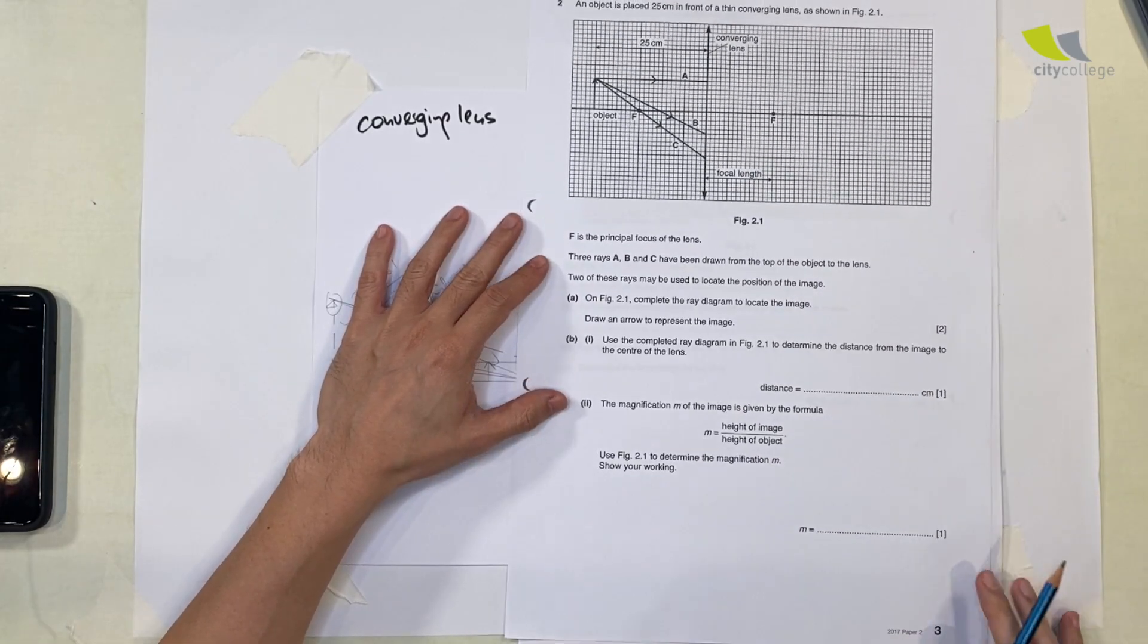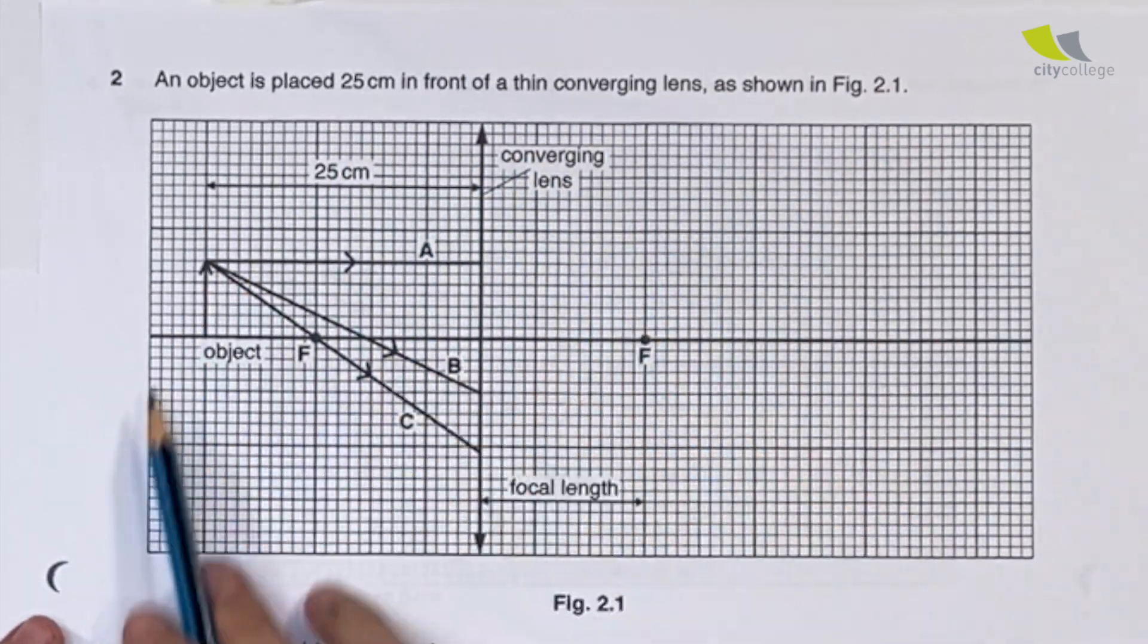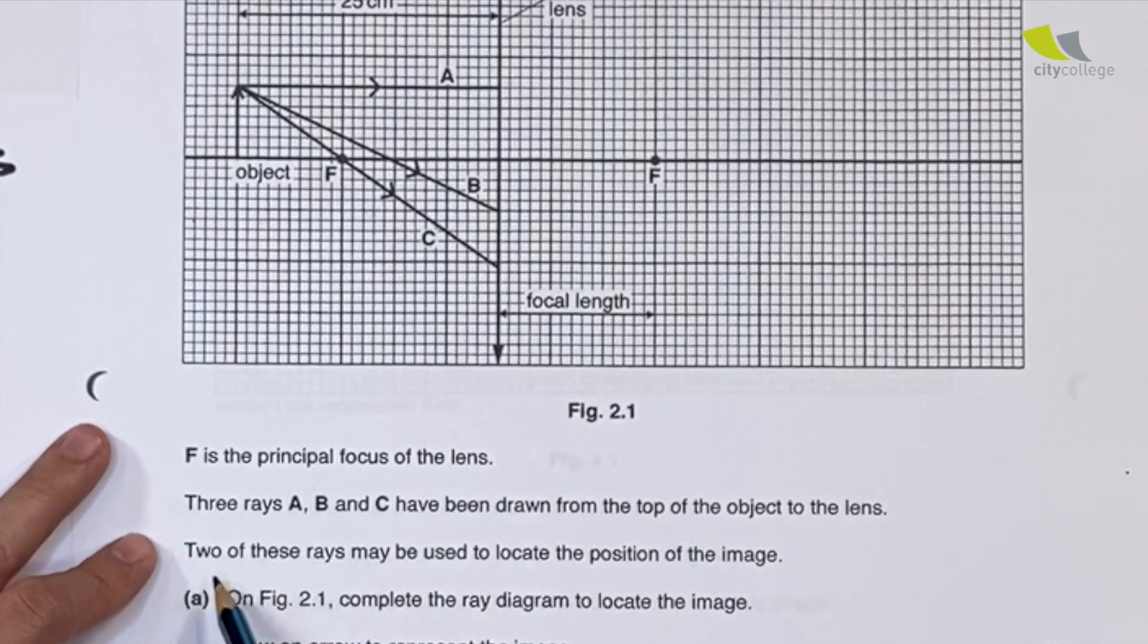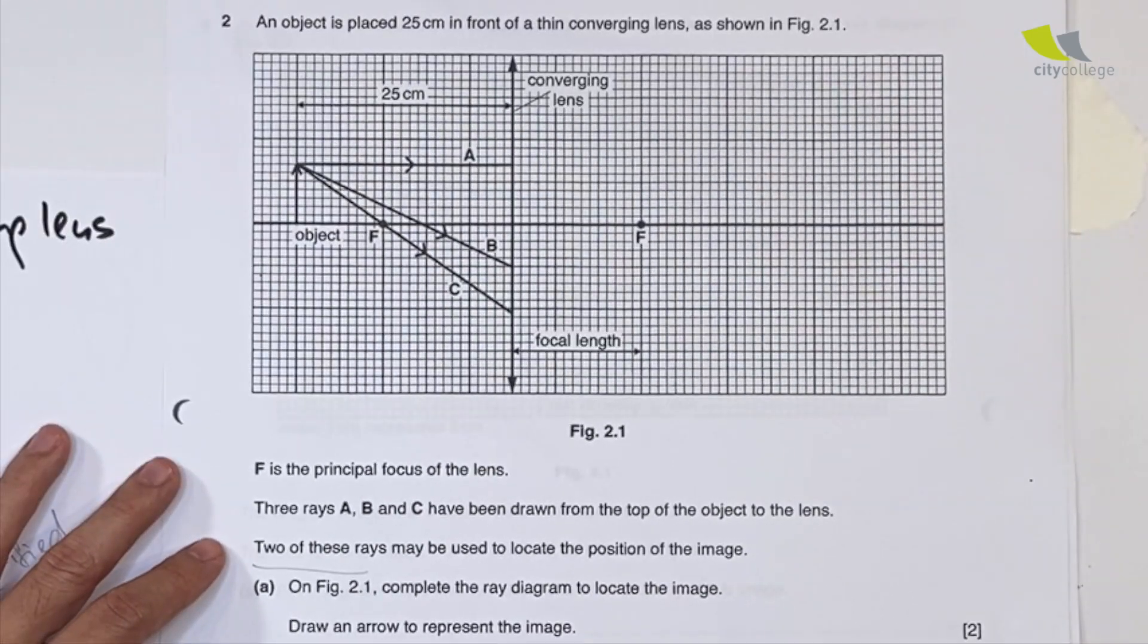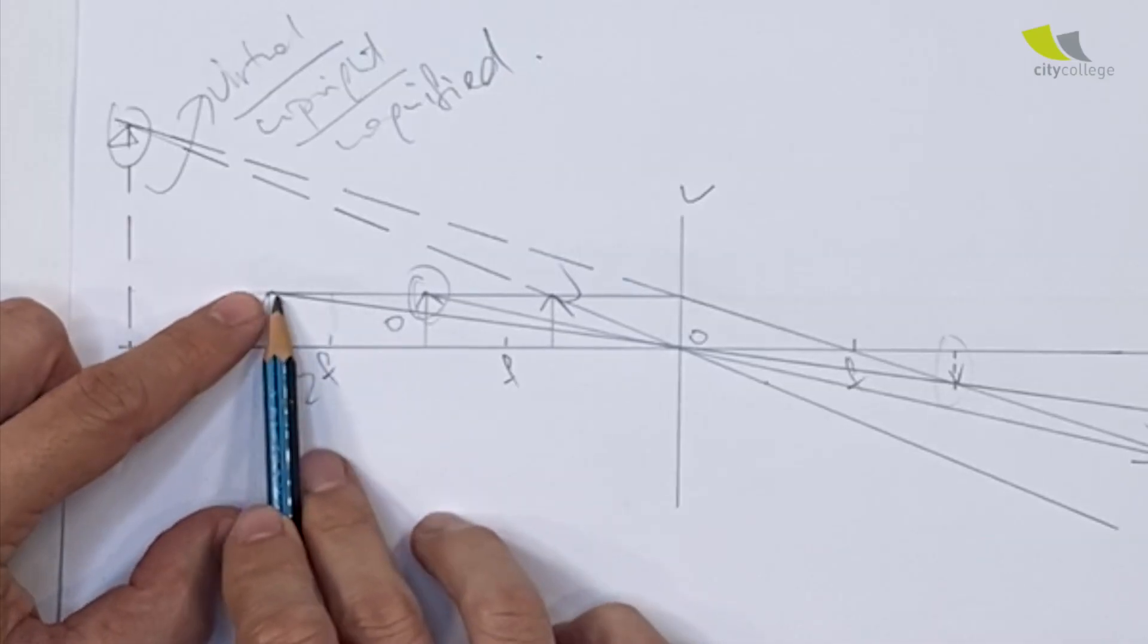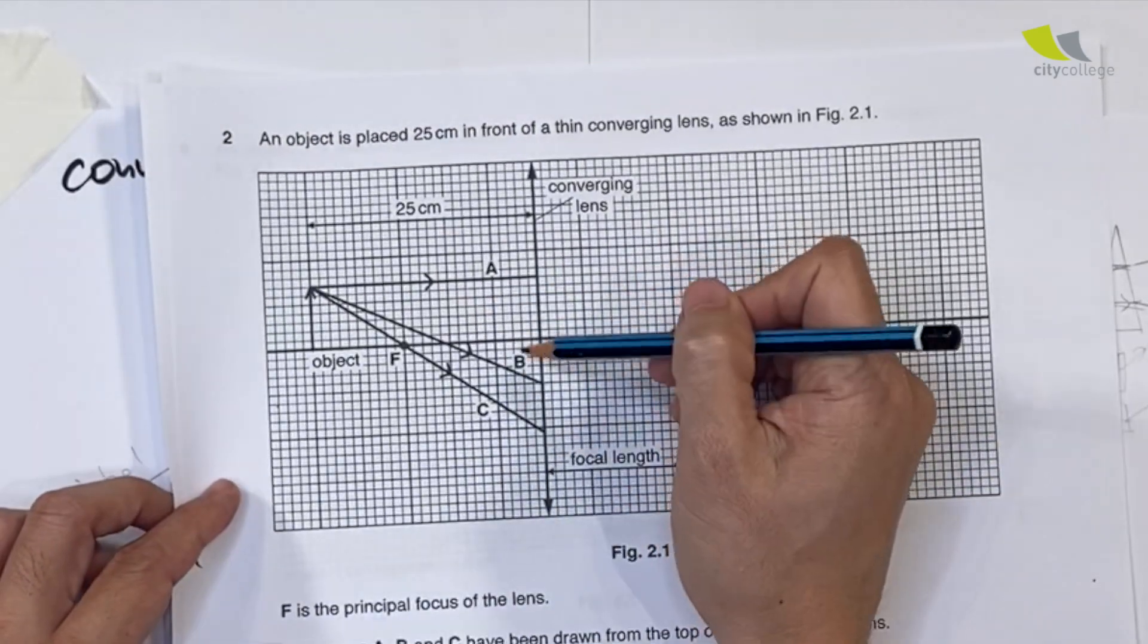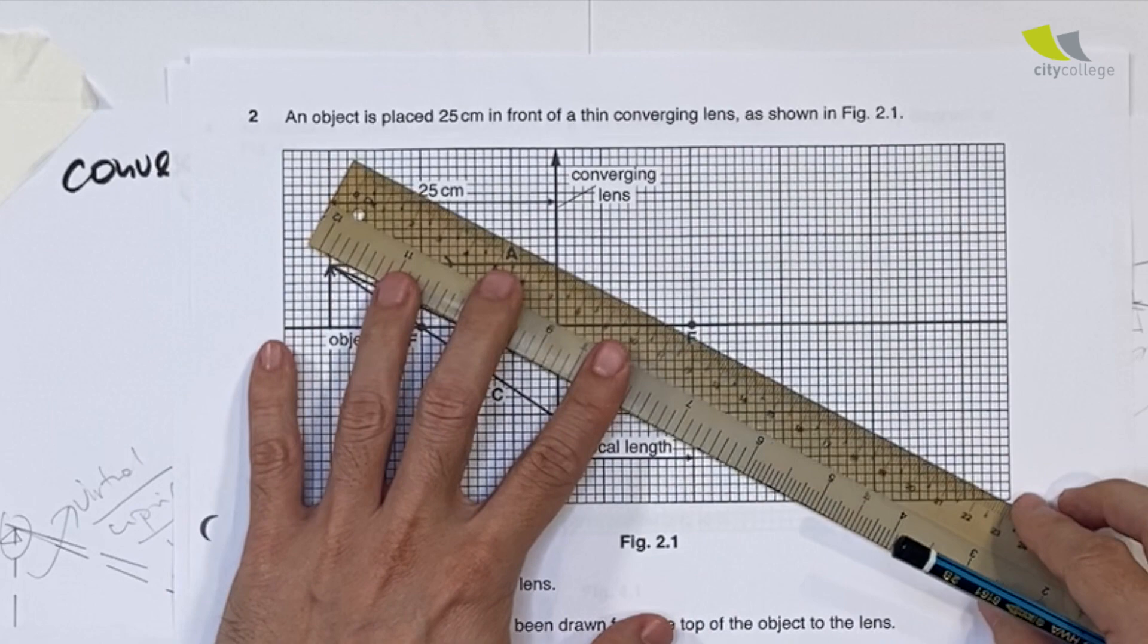First question from year 2017. An object is placed 25 cm in front of a thin converging lens as shown in the diagram. F is the principal focus. A, B, C have been drawn from the top of the object to the lens. Two of these rays may be used to locate the position of the image. Complete the ray diagram to locate the image and draw an arrow to represent the image. What do we need? We need the ray that goes through the optical center - it doesn't bend. We need a second ray that is parallel to the principal axis. Out of A, B, C, which one can I use? Ray A - if it's parallel to the principal axis, as it leaves the lens, it's going to cut through the focal point.